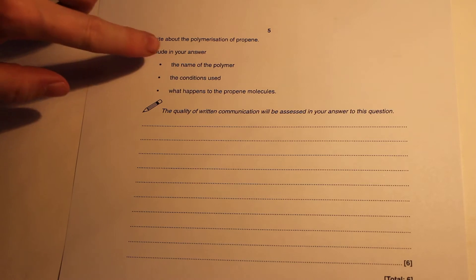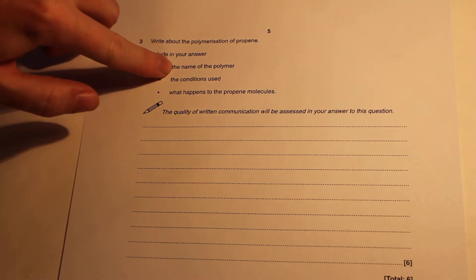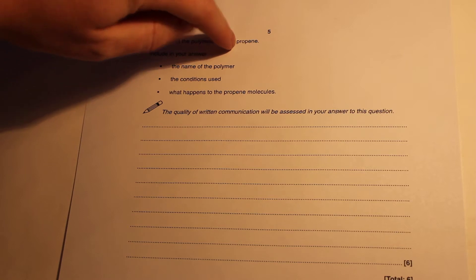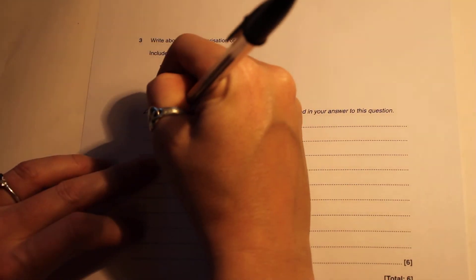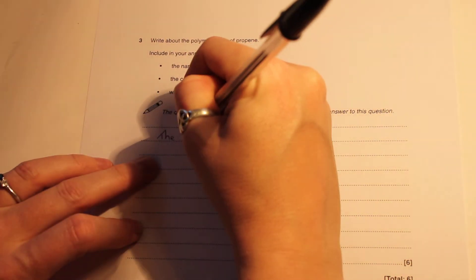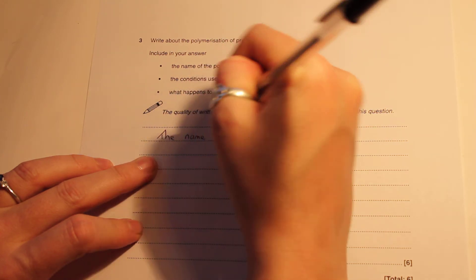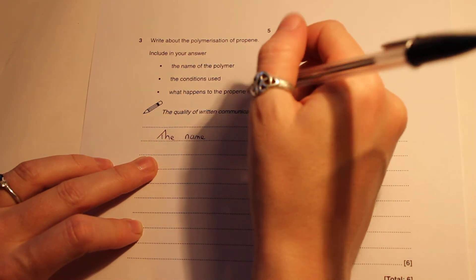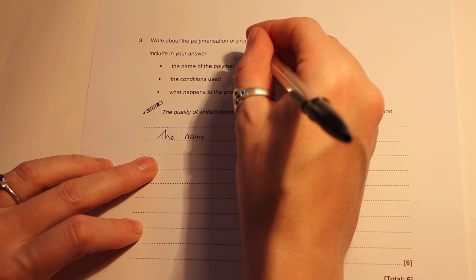The first thing we're going to do is the name of the polymer. We're looking at the polymerization of propene and hopefully we remember that when we're working out the name of a polymer, all we need to do is write the word poly in front of the name of our little unit here.